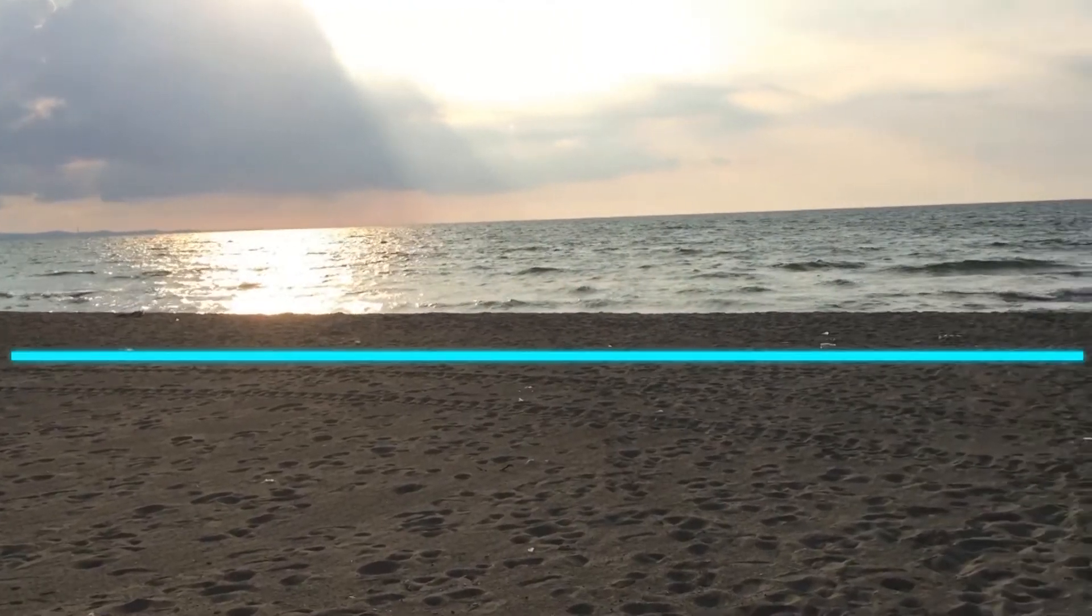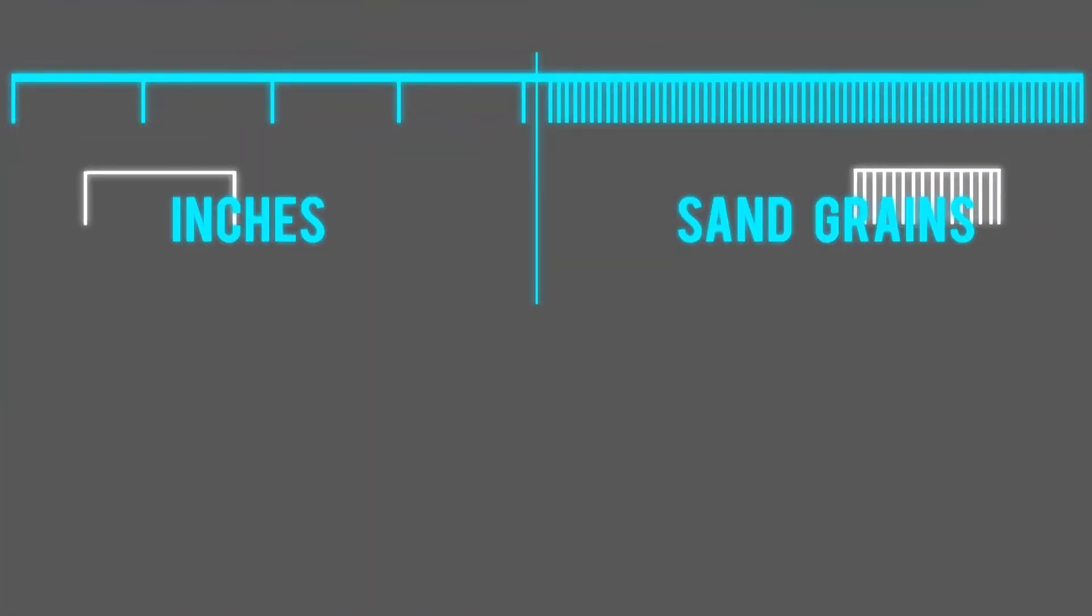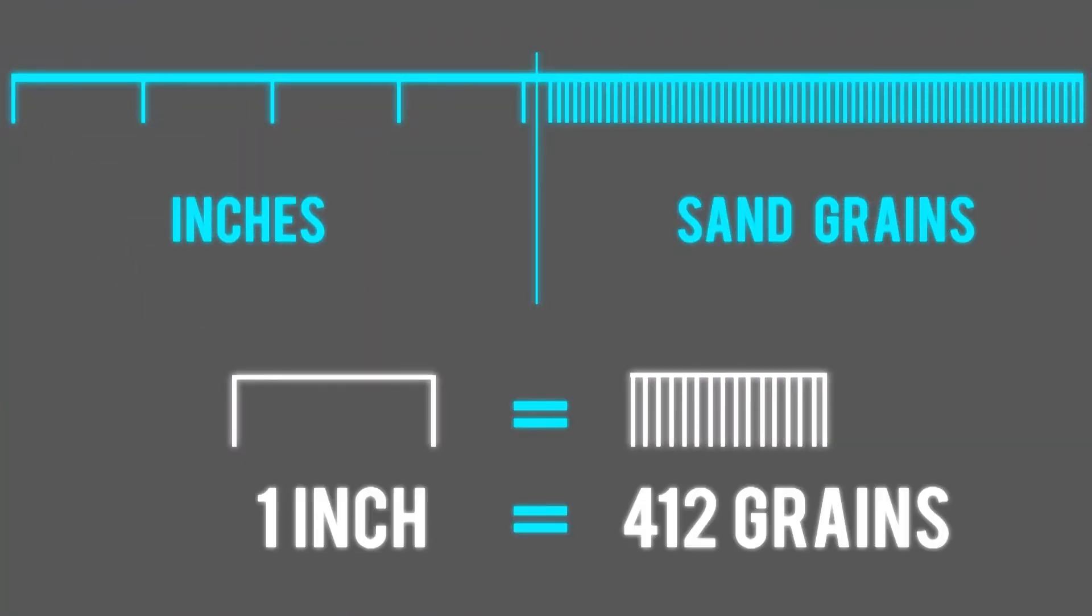It's quite the same as measuring the shoreline using inches and sand grains as units. Both will give correct yet different results. Still, we can say that the grains will give a much more precise measurement compared to inches.